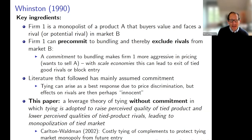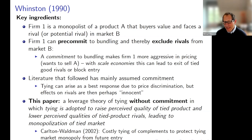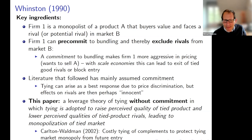The paper showed that if that firm — the monopolist in A — could pre-commit to bundling, it could profitably exclude rivals in some cases from market B and monopolize it. The basic mechanism was that a commitment to bundling made firm one more aggressive — it wanted to sell this very valuable product A, and once it committed to bundling it would be aggressive. If there were scale economies in market B, that could lead to the exit or blocked entry of tied good rivals.